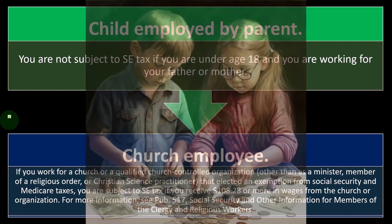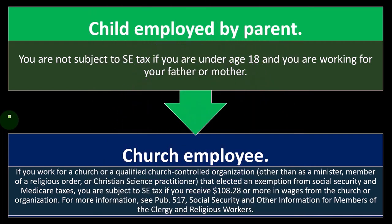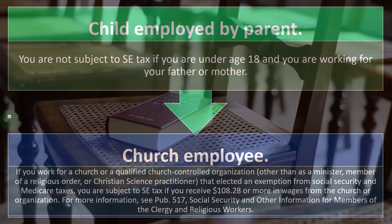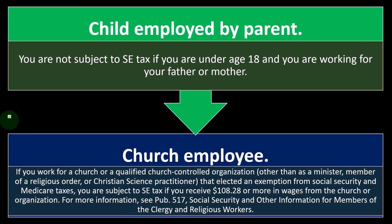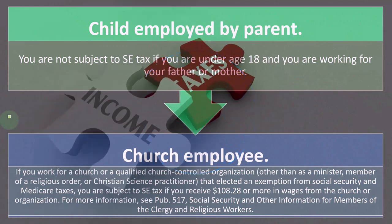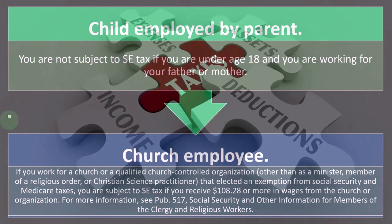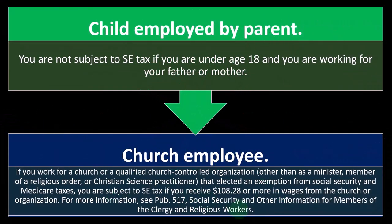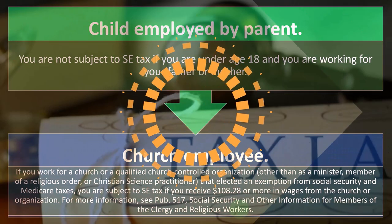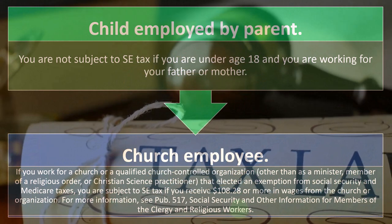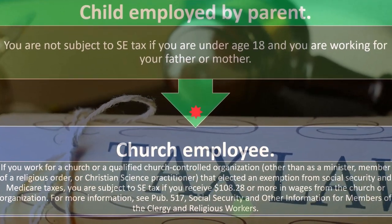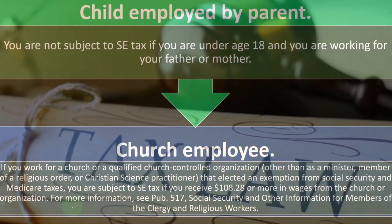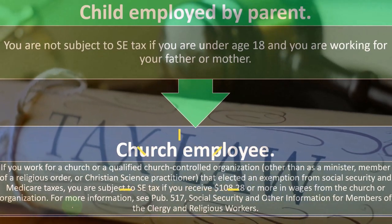For church employees: if you work for a church or a qualified church-controlled organization — other than as a minister, member of a religious order, or Christian Science practitioner — that elected an exemption from social security and Medicare taxes, you are subject to SE tax if you receive $108.28 or more in wages from the church. That number is one of those rules that hasn't been changed in a long time, which is why it seems oddly low — it hasn't been indexed for inflation. For more information, see Publication 517, Social Security and Other Information for Members of the Clergy and Religious Workers.